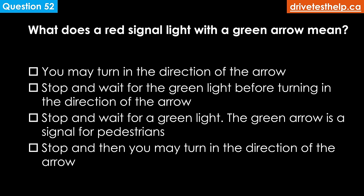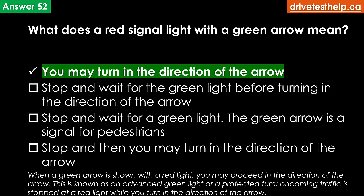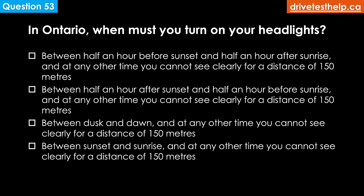What does a red signal light with a green arrow mean? Options: you may turn in the direction of the arrow; stop and wait for the green light before turning; stop and wait for a green light; the green arrow is a signal for pedestrians; stop and then you may turn in the direction of the arrow. The correct answer is you may turn in the direction of the arrow.